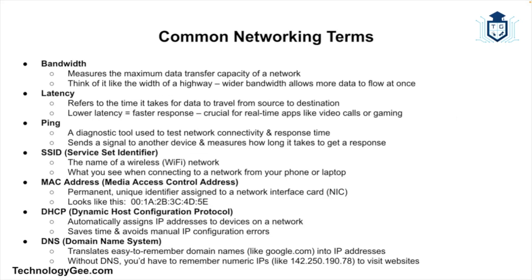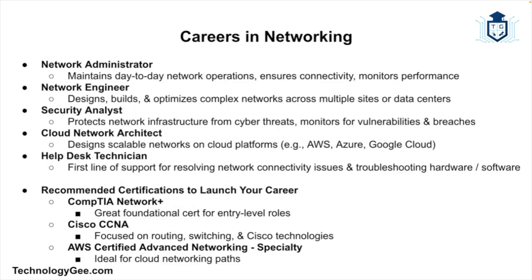If you're diving into networking, here's a quick glossary of terms you'll encounter. Bandwidth is how much data can travel across the network at once. Latency is the delay before data reaches its destination. Ping is a test to see how quickly you can reach another device. SSID, or Service Set Identifier, is the name of a Wi-Fi network. MAC address is a unique ID for a network device. DHCP is a system that assigns IP addresses automatically. And DNS, or Domain Name System, is like the internet's phone book — it translates names like google.com into an IP address.